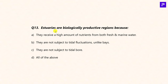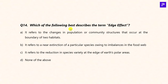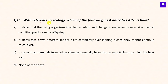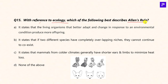Question 11: Estuaries are biologically productive regions because they are wetlands that form Ecotones between major terrestrial and aquatic ecosystems, receiving nutrients from both. Question 12: Which of the following best describes edge effect? It refers to changes in population or community structures that occur at the boundary of two habitats — answer is A. Question on Allen's rule: In colder climates, mammals have a lesser surface-to-volume ratio to prevent heat loss; they generally have shorter ears and limbs to minimize heat loss — answer is C.